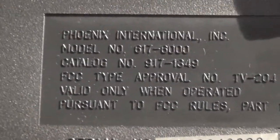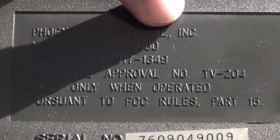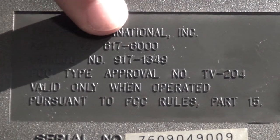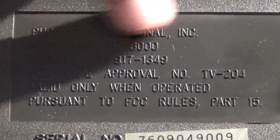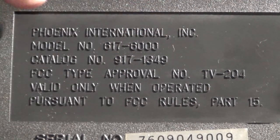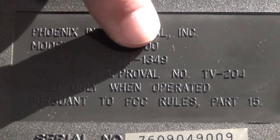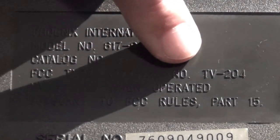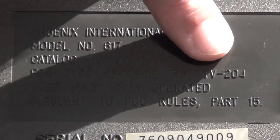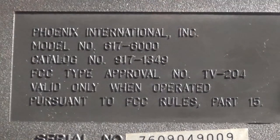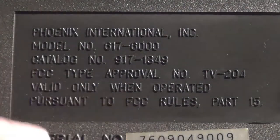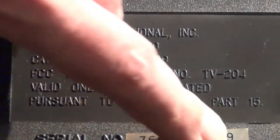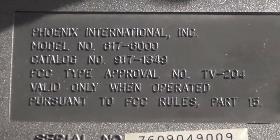I can't find any other year marks on this thing at all. The only other identifying marks is that it was originally made by Phoenix International Incorporated, and it does have a model number of 617-6000. But when I tried to Google any of this information I came up with absolutely nothing. It does have a catalog number that shows 917-1349. Again, I can't find a reference to that number anywhere. And then it shows an FCC Type Approval Number called TV-204. I didn't try to look that one up but it's possible I might get something on that. And then, you know, it talks about the usual stuff, valid only when operated pursuant to FCC rules, etc., etc.